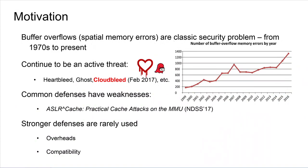To provide motivation: buffer overflows have been around basically forever — a very classic security problem. Despite this, they still continue to be a threat. In recent years there have been several prominent bugs: Heartbleed, Ghost, and very recently the Cloudbleed bug, which is a buffer overflow. In addition, the common defenses that are widely deployed are actually very weak. Even earlier today there was a talk attacking address space layout randomization. Stronger defenses do exist, but they tend to be rarely used in practice, mainly because of the overheads they introduce and compatibility problems.